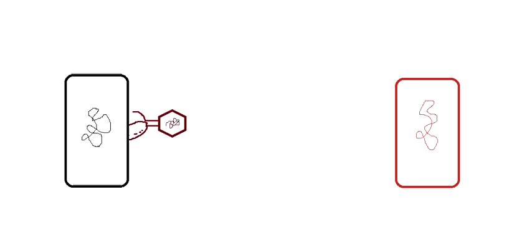As per the lytic cycle mechanism, the virus injects its genetic material into the bacterial cell, which degrades the genetic material of the bacteria. Then the virus replicates its genetic material and translates it into proteins for the head, tail fibers, and other components.